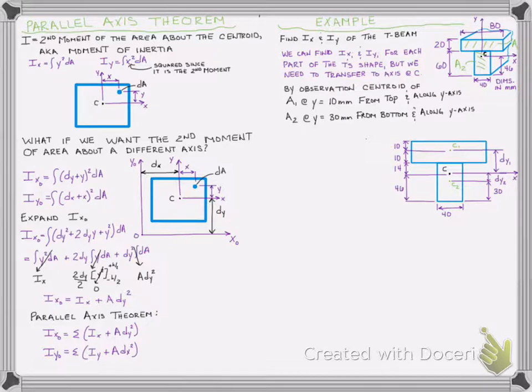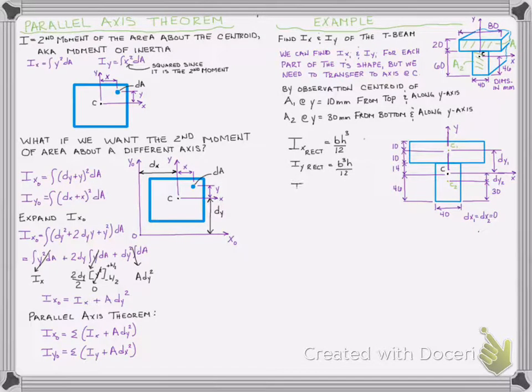Now, just looking at this, I can see that the y-axis goes right through all the centroids, so my D-x sub-1, D-x sub-2, those all equal zero. And since I want to apply the parallel axis theorem here, it certainly doesn't hurt to remember that we've already established that I-sub-X of a rectangle in class was BH cubed over 12, and I-sub-Y of a rectangle was B cubed H over 12. And we know that the parallel axis theorem says we can then just sum the I of each rectangle plus the area of each rectangle times its D distance squared.